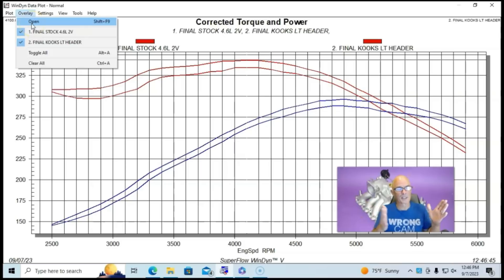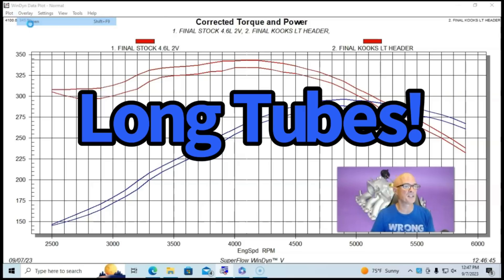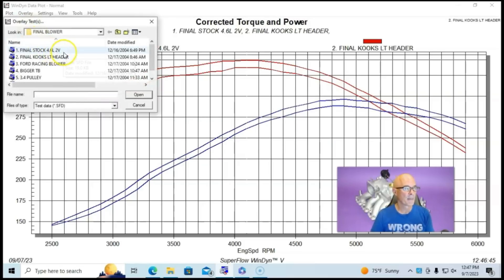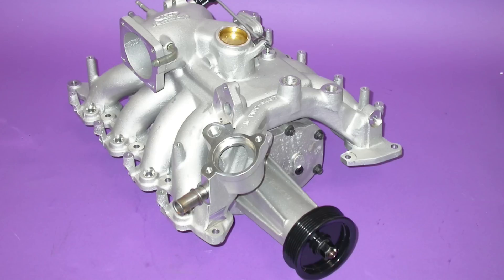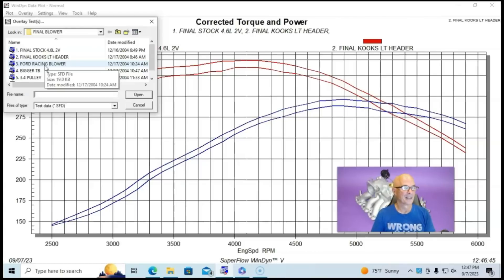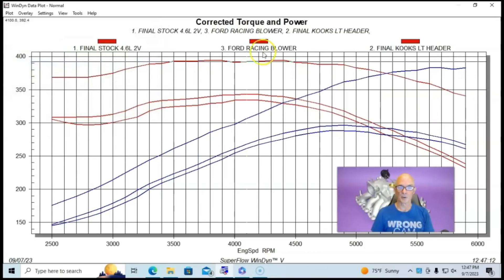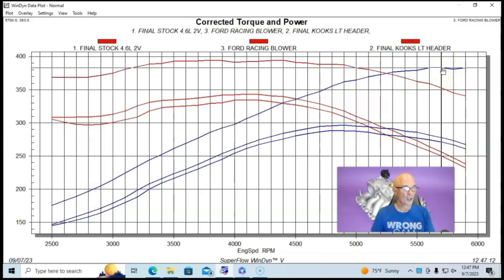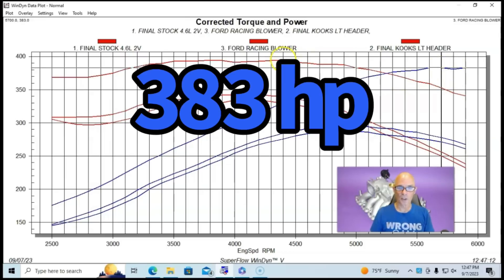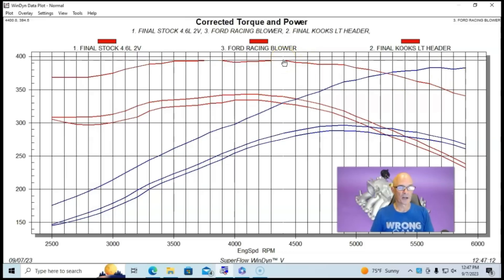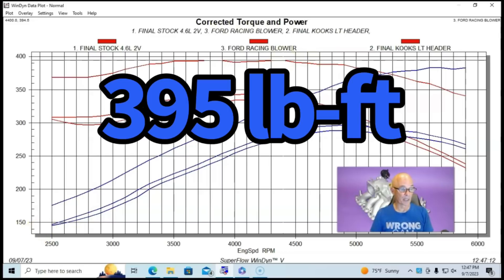This is normally what happens. Headers gain power everywhere, all the way through the curve because they have a scavenging effect, not just a flow effect. And then here's what happened when we put the Ford Racing supercharger. I'll go ahead and show you a photo of that. It's actually behind me on my green screen here. Here's what happened when we bolted the blower on. 383 horsepower and 395 foot pounds of torque.